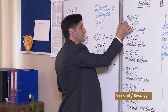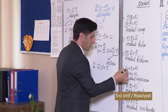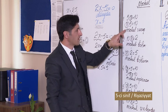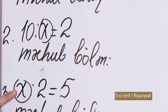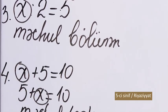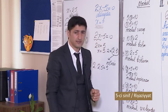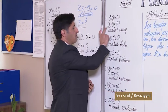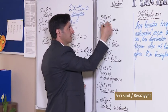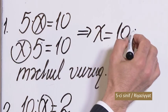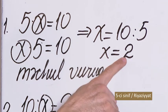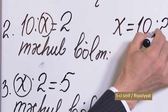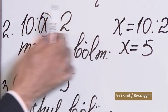Bizə verilən tənliklərdəki dəyişənləri məchul adlandırırıq: birinci tənlikdə vuruq, ikinci tənlikdə bölən, üçüncü tənlikdə bölünən, dördüncü tənlikdə toplanan, beşinci tənlikdə azalan, altıncı tənlikdə çıxılandır. Məchul vuruğu tapmaq üçün hasili vuruqların birinə bölmək lazımdır - x = 2. Məchul böləni tapmaq üçün bölünəni qismətə bölmək lazımdır - x = 5.